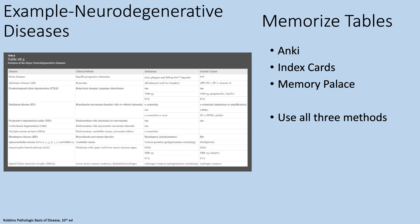Another technique people use is a memory palace. For example, if you grew up in a house or apartment and you're very familiar with the rooms — in your head, you picture going through the rooms: the kitchen is one disease, your bedroom is another disease, the bathroom is another. The furniture in each room could represent disease mechanisms, and so on. I recommend looking this up elsewhere on the internet; I'm not really an expert on memory palaces, although I did use them to get through my boards. I recommend using all three methods.